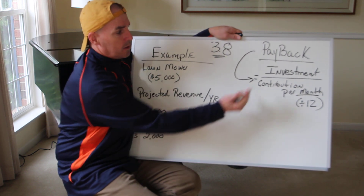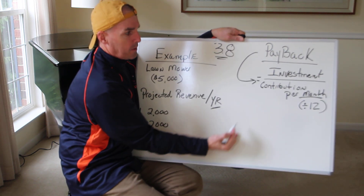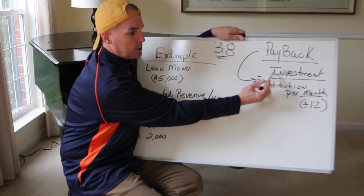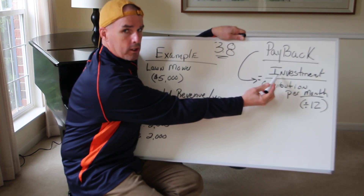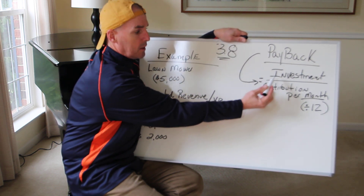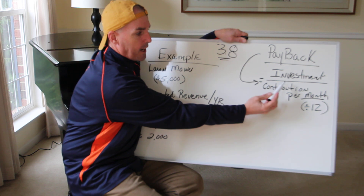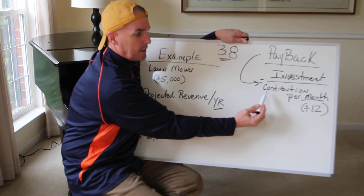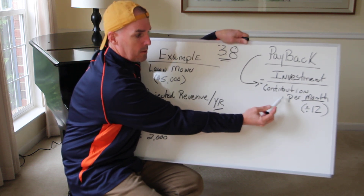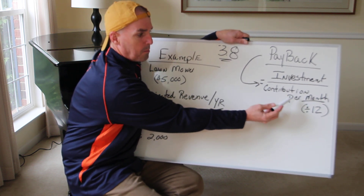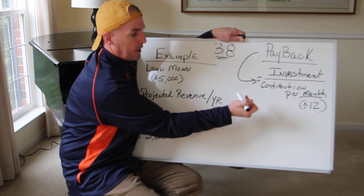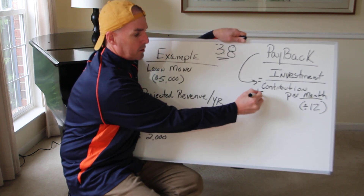The formula for payback is: you take your initial investment and you divide it by the contribution per month. That's one of the formulas.